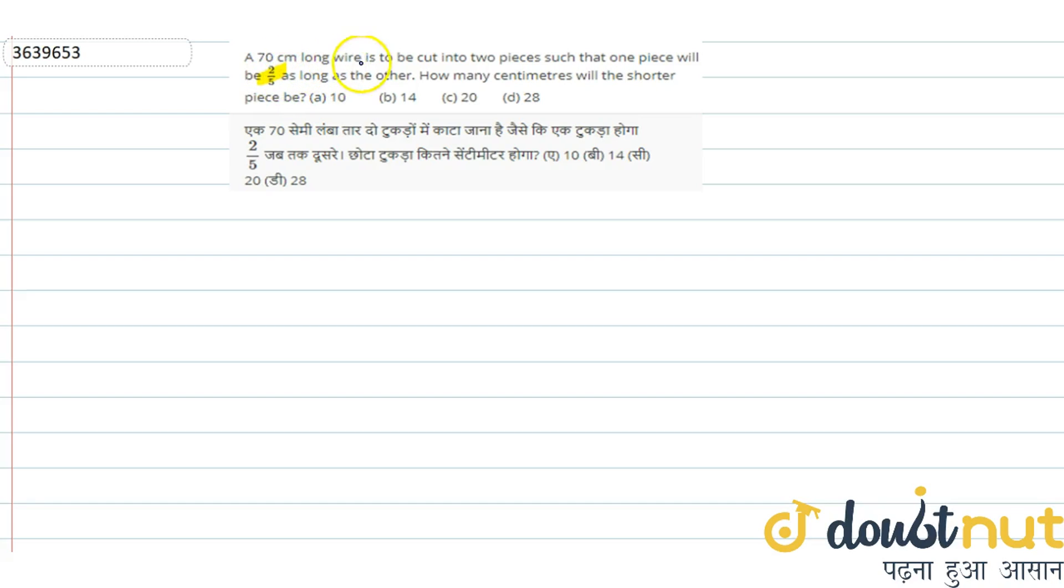So, the total length is 70 cm long. Let one piece be x, and the other piece be 2/5th of x. So, let the length of one piece equal x cm. The length of the other piece is 2/5 x cm.